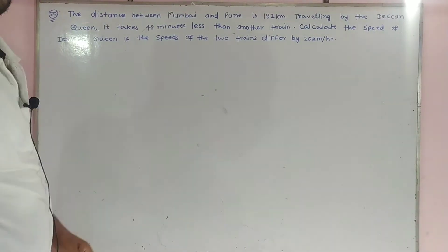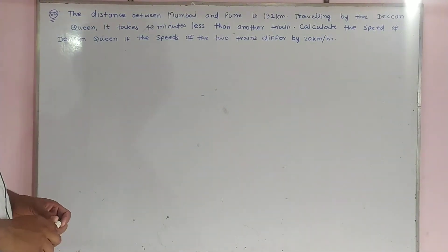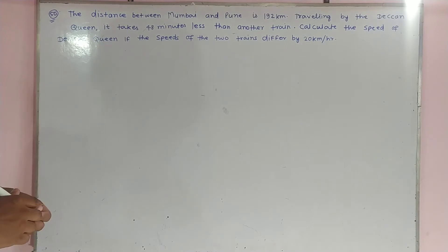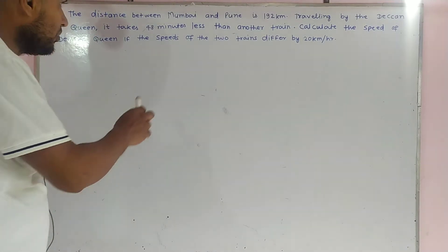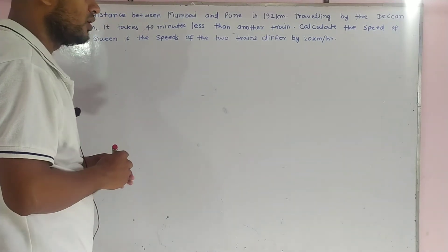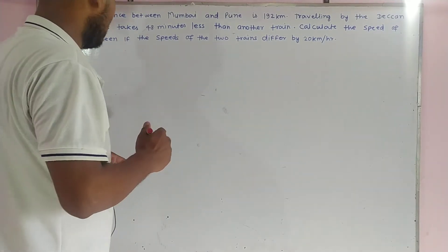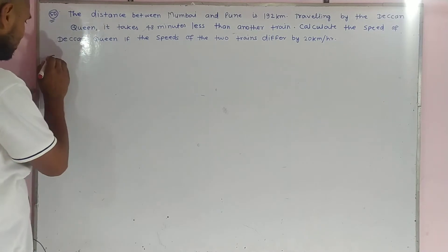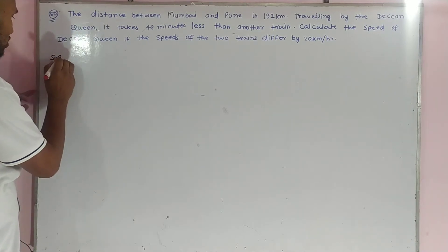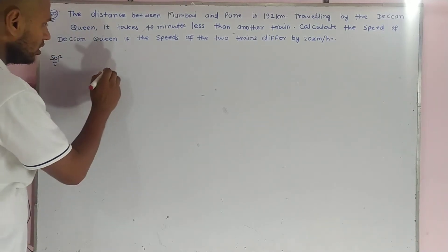Good morning my students, good morning to all of you. Let us see here question number 50. The distance between Mumbai and Pune is 192 kilometers. Let us see the solution of this question.